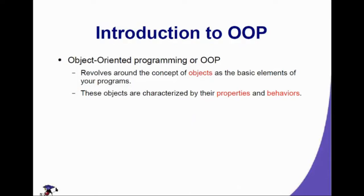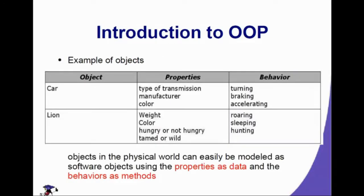Let's define first what object-oriented programming, or OOP, is. OOP revolves around the concept of objects as the basic elements of your programs. These objects are characterized by their properties and behavior. What we see in the physical world can be modeled in software objects by their properties and behaviors. For example, a car has properties such as type of transmission, manufacturer, and color, and behaviors such as turning, braking, and accelerating.